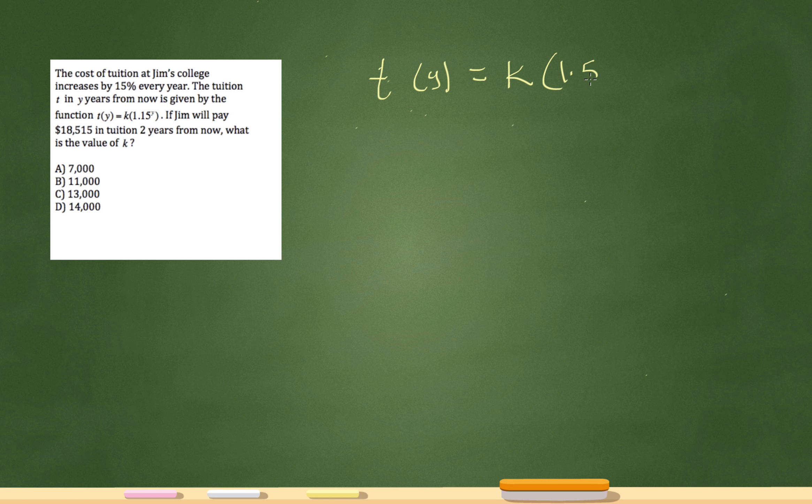So it's k times 1.5 raised to the y power, right? So now I know that the tuition t really represents the tuition, and the y represents the years, and I'm trying to solve for k, so that's all.